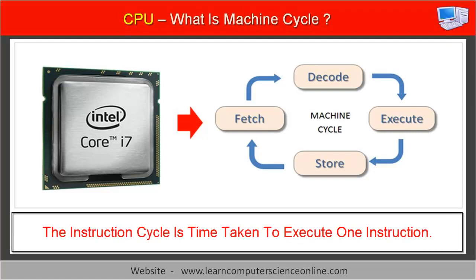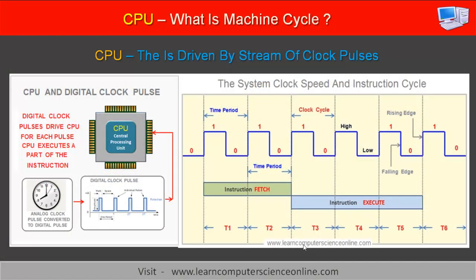In simple terms, the instruction cycle is the time taken by the CPU to execute one program instruction. The CPU is driven by a stream of clock pulses generated by the system clock. This stream of clock cycles helps the CPU to synchronize all the activities. For each clock tick, the CPU executes a part of the machine cycle. The instruction cycle is the sequence of steps executed by the computer CPU to execute one single instruction.